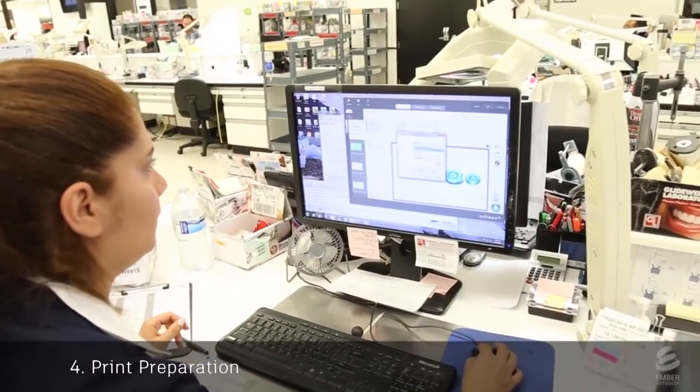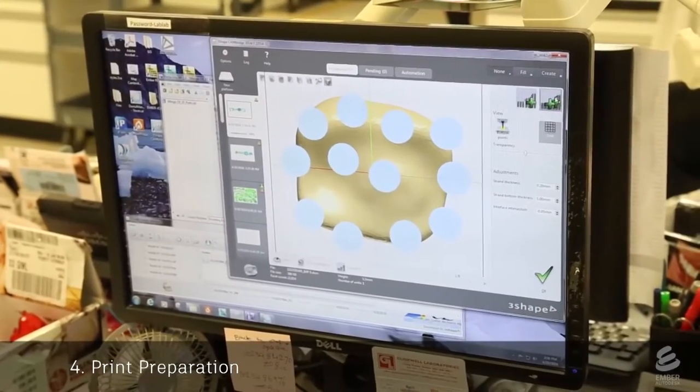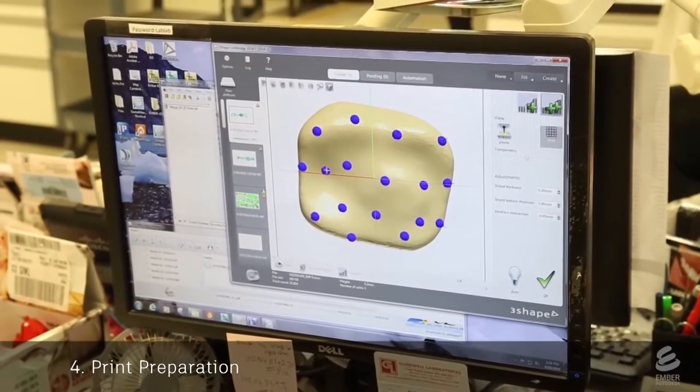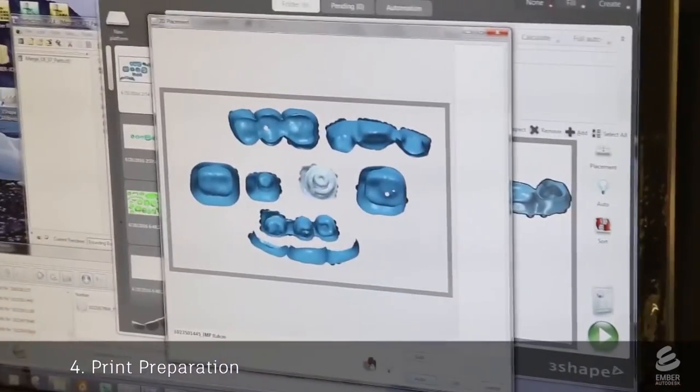Next, the models for the crowns and copings are prepared for 3D printing on Ember. A tech uses special dental software to add supports onto the model. Then the models are tightly arranged in a plane.